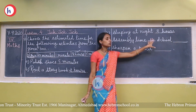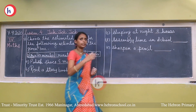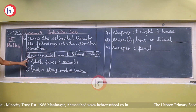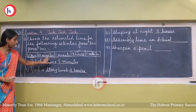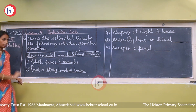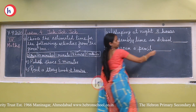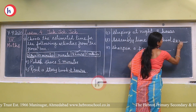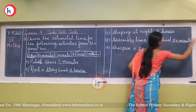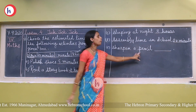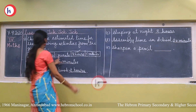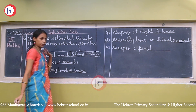Next activity: assembly time in school. It will be around 20 to 40 minutes — 1 minute is not possible, so the answer is 20 minutes. Last activity: sharpen a pencil. We can complete it in 1 minute. So the answer is 1 minute.